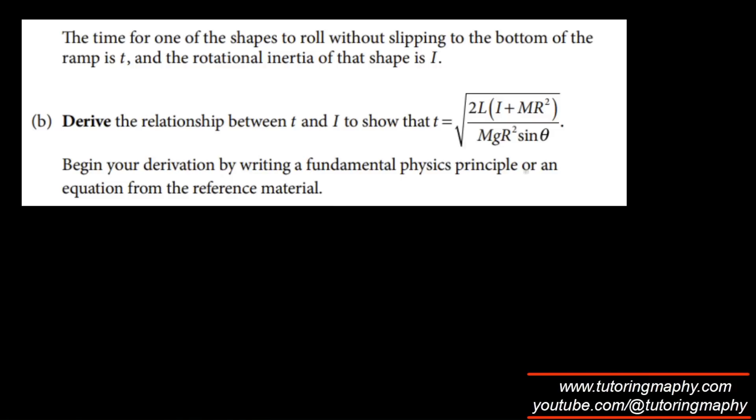Now the time for one of the shapes to roll without slipping to the bottom of the ramp is T, and the rotational inertia is I. So justify the relationship between T and I with this, and we have to derive using fundamental physics principle. So it's something like this: this is the shape, this is L, and this is theta.